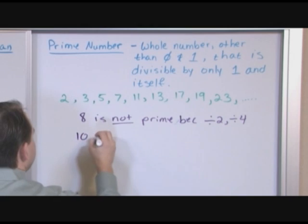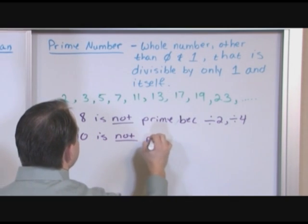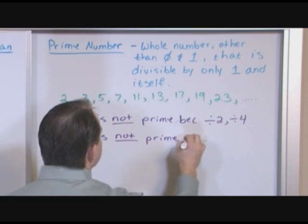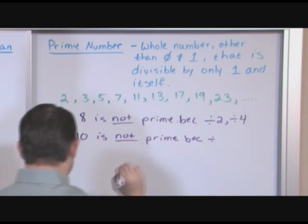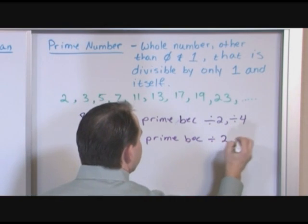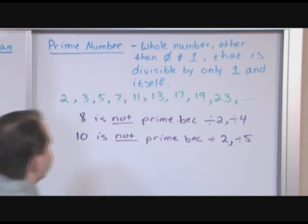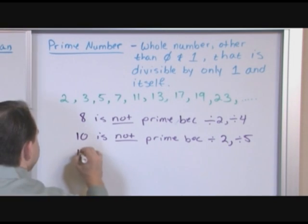The number ten is not prime because you can divide it by two and by five evenly. One more example.